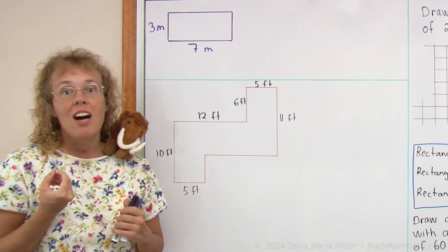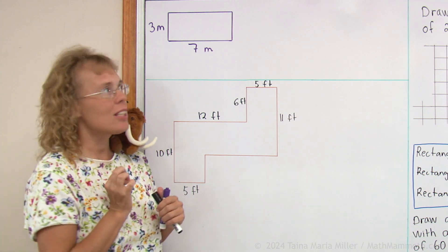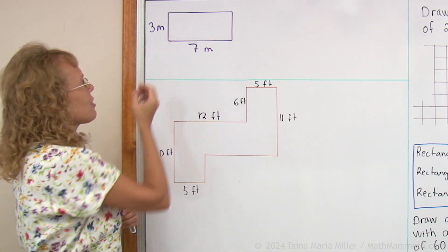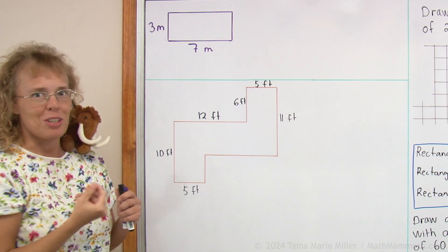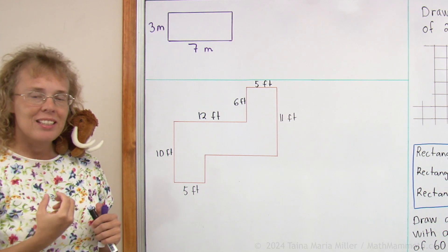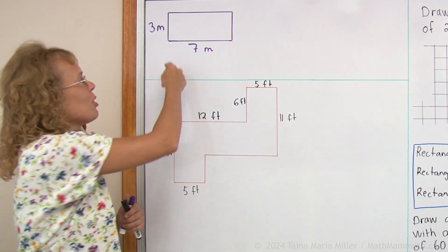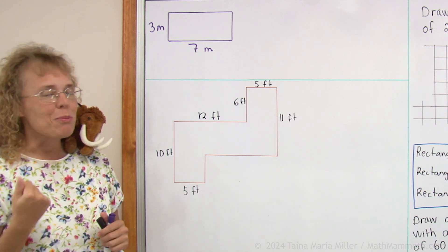Area has to do with covering and is always measured in squares of some size. For example, for this rectangle, I would try to draw squares inside it and count how many there are and that would be the area. Perimeter is the around measure. You go around the figure and the distance you go is the perimeter.